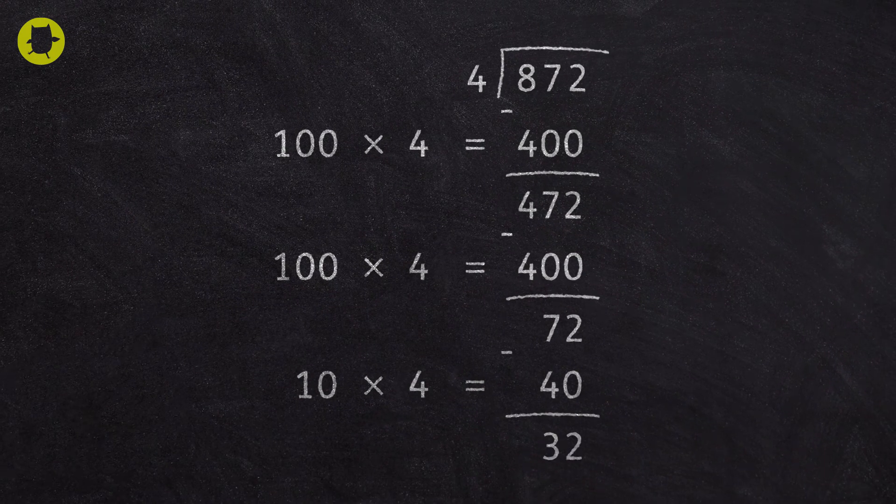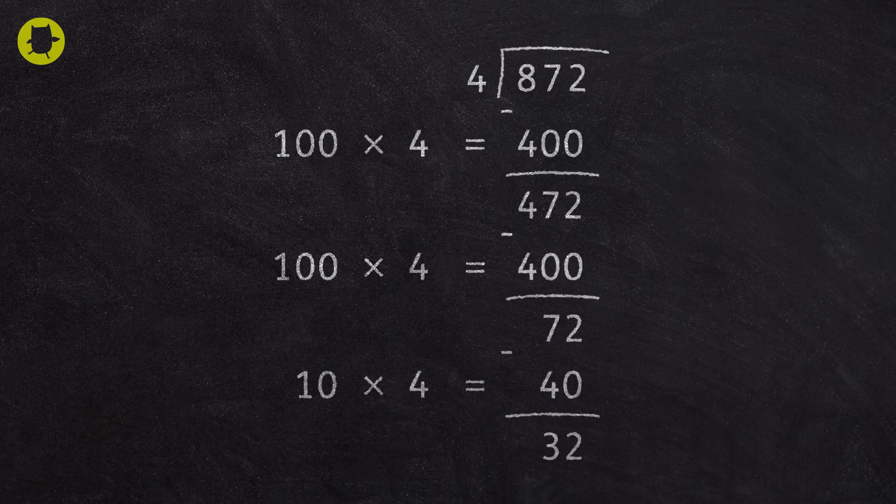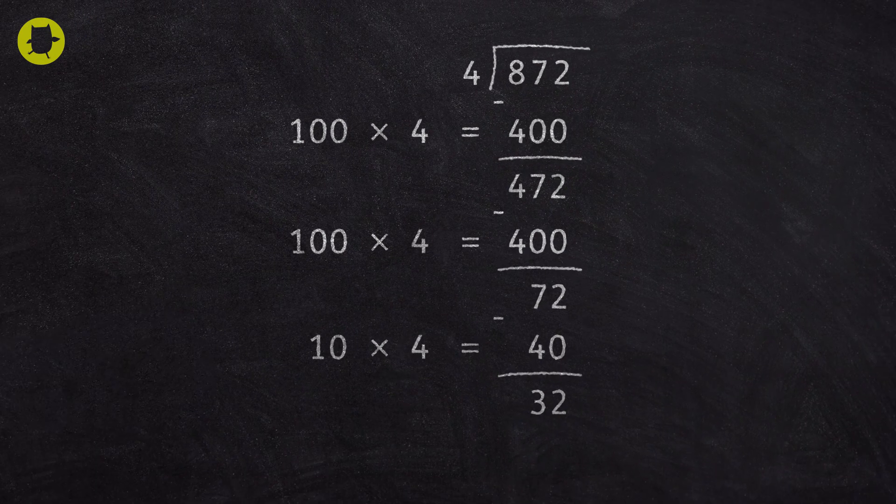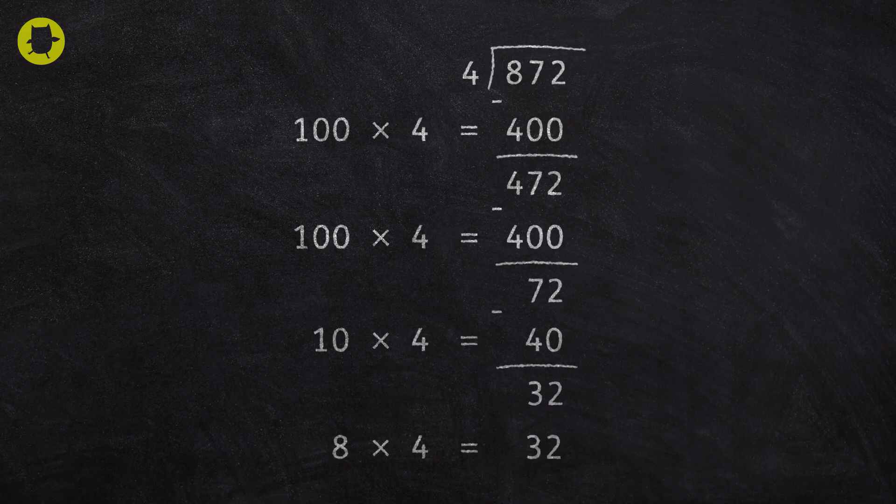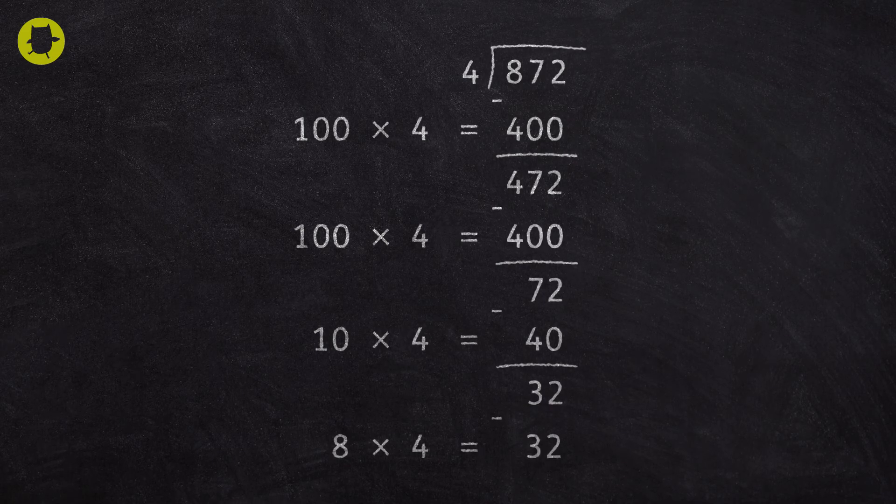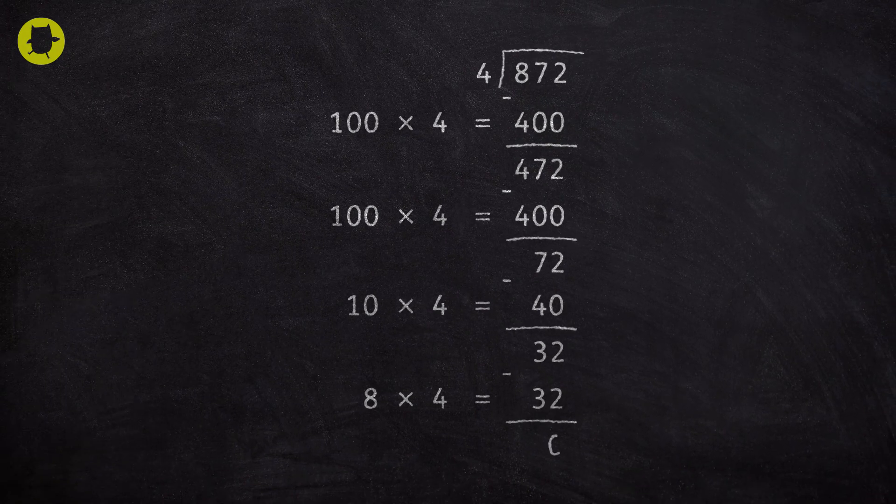If we think back to our four times table again, we know that 8 multiplied by 4 is 32. So we can subtract 32 from 32, leaving us with 0.